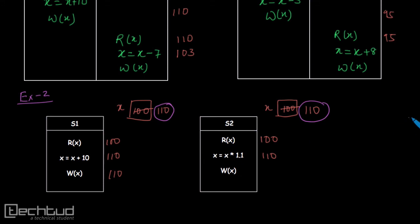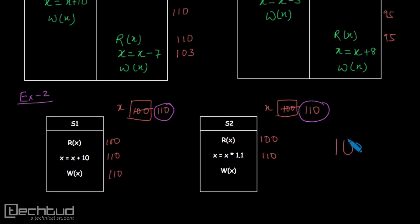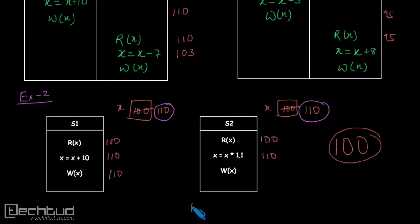You might say these two schedules are result equivalent, but that would be too early and wrong. The problem is: if you start with any value other than 100, they won't give the same database state. So these two schedules are result equivalent only for X = 100 — and that is not the definition. A schedule should give the same database state for any value of the variable. Therefore, these two schedules are NOT result equivalent.